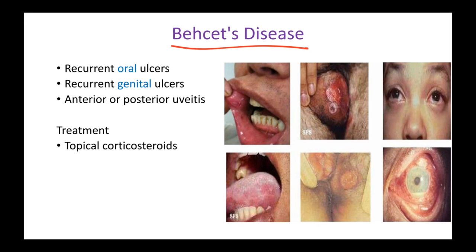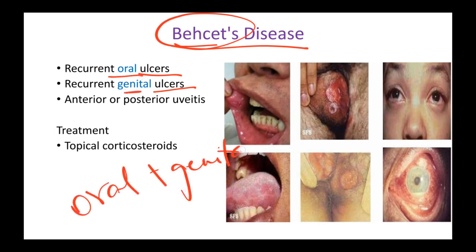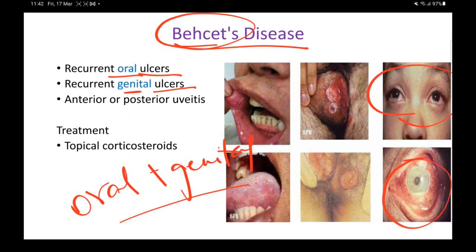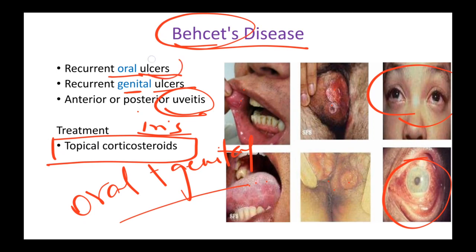Behçet's disease is characterized by oral plus genital ulcers — this combination is almost always Behçet's disease. The patient presents with oral ulcers, genital ulcers, and also uveitis, where the iris becomes inflamed. Treatment is topical corticosteroids — since these are localized ulcers, nothing systemic is required. Corticosteroid ointments applied topically should be sufficient.